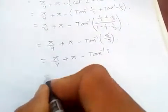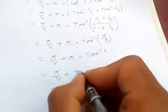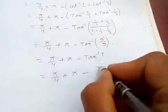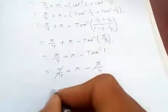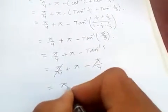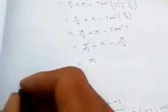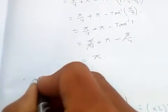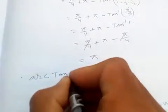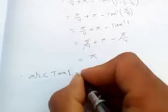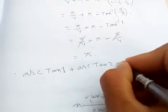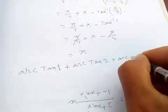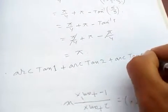Since arctan(1) = π/4, we have π/4 + π − π/4. The π/4 terms cancel, leaving us with π. Therefore, arctan(1) + arctan(2) + arctan(3) = π.